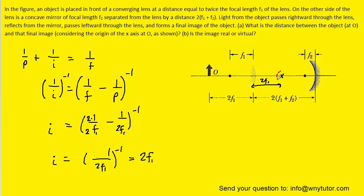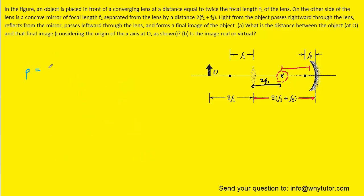The image marked by X is going to serve as the object for the mirror placed on the right-hand side. We need to figure out the object distance — that is, the distance from X over to the mirror. The total distance from the lens to the mirror is 2F1 + F2, and the image X is at 2F1, so subtracting those two distances gives the object distance from X to the mirror, which simplifies to 2F2.